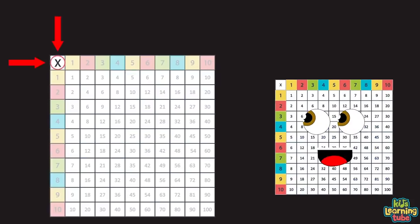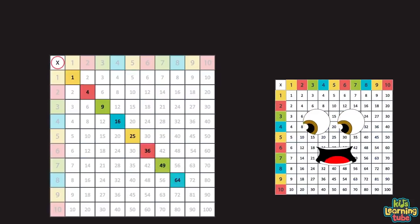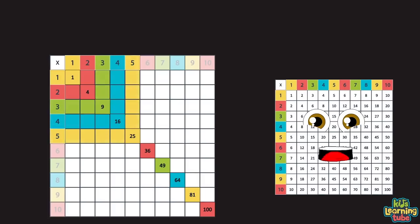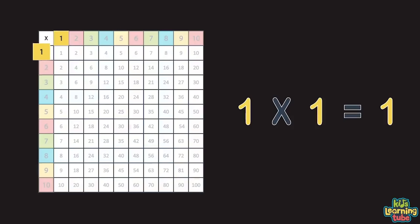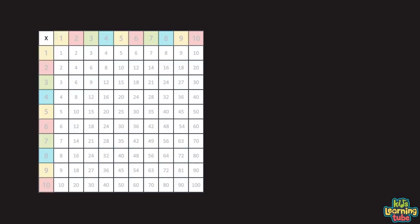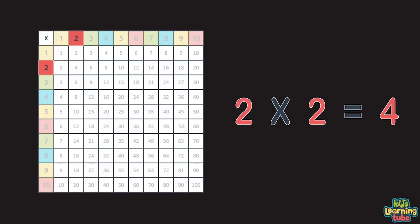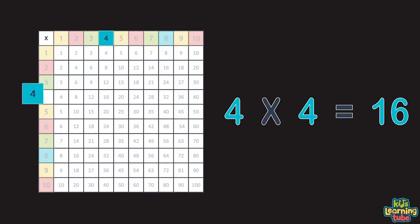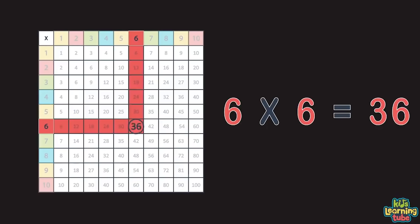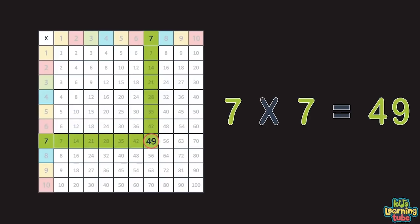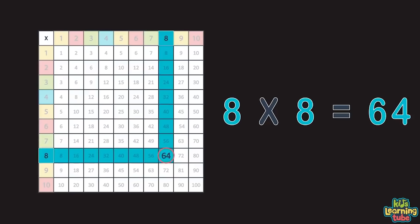When we start at the x and count diagonally down, you'll find the answer to each number multiplied by itself without a frown. One times one equals one. Two times two equals four. Three times three equals nine. And four times four is sixteen. Five times five is twenty-five. Six times six is thirty-six. And seven times seven is forty-nine. Eight times eight is sixty-four.